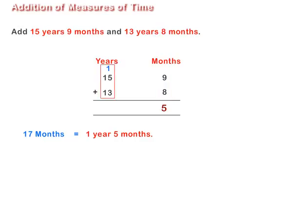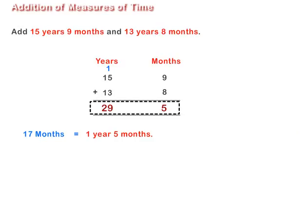Carry year to years and add, that is, 1 plus 15 plus 13 equal to 29 years. Thus, the sum of 15 years 9 months and 13 years 8 months is 29 years 5 months.